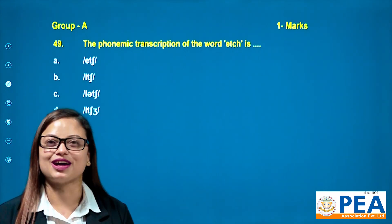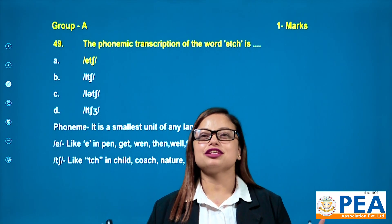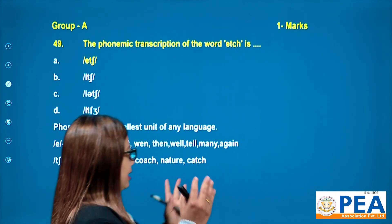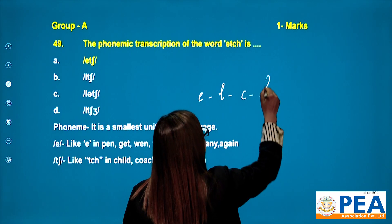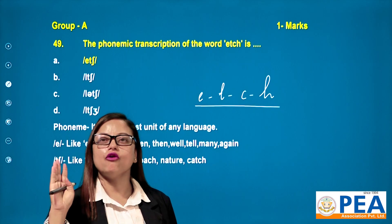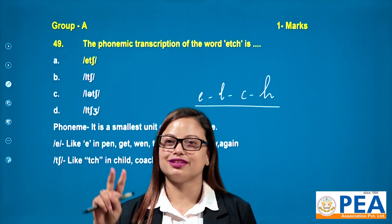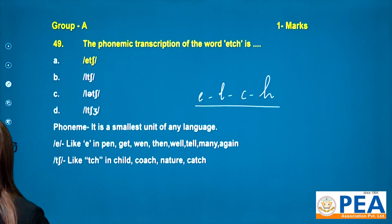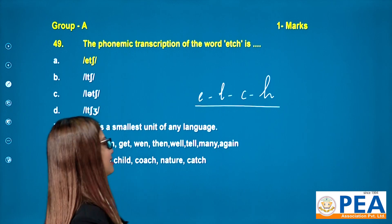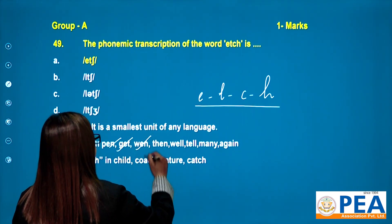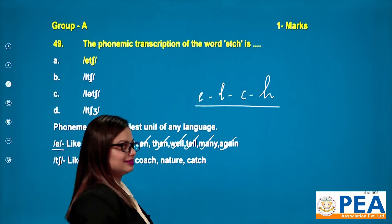We have four options. Now let's break down all these options. What is meant by phoneme? A phoneme is the smallest unit of language. In the word H-E-T-C-H, it has altogether four letters, but if we observe the sound, it has just two individual sounds. The very first sound is the 'e' sound, as in pen, get, when, then, well, tell, many.